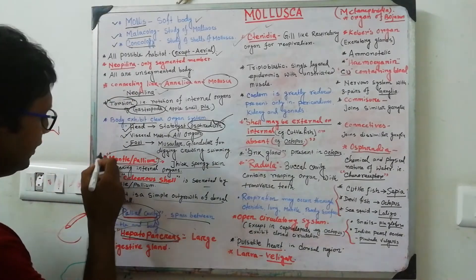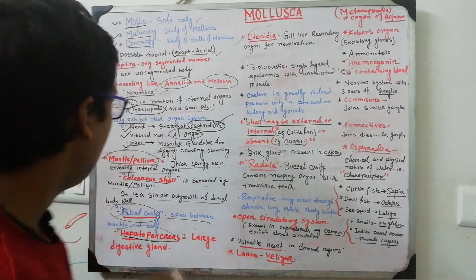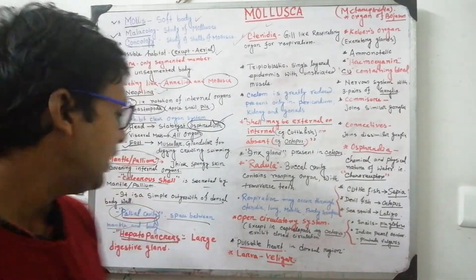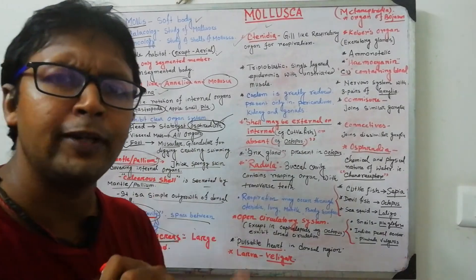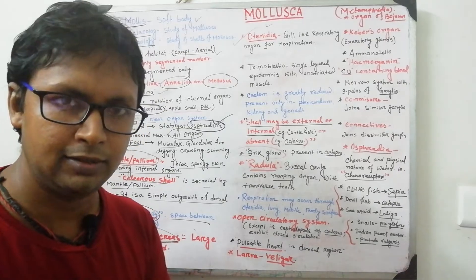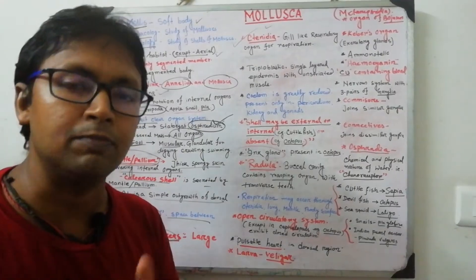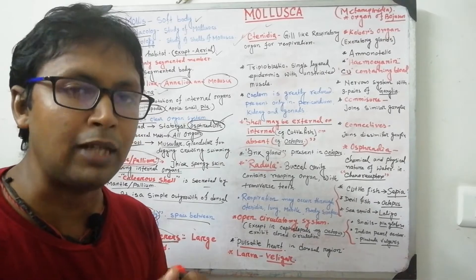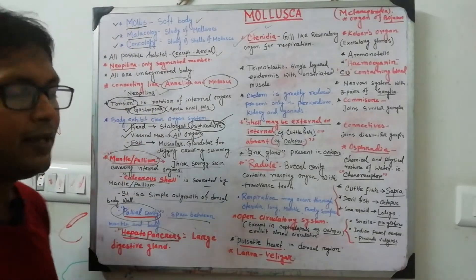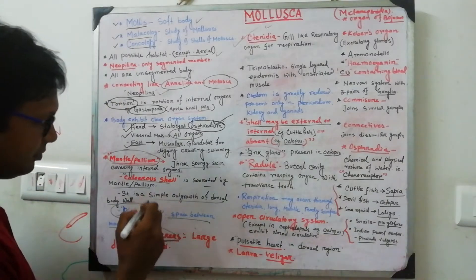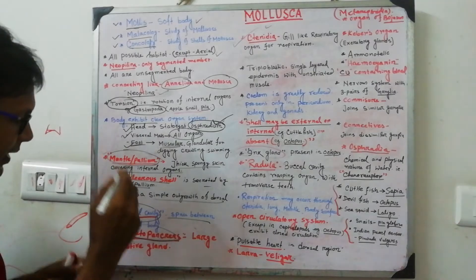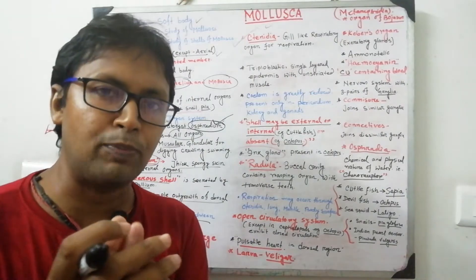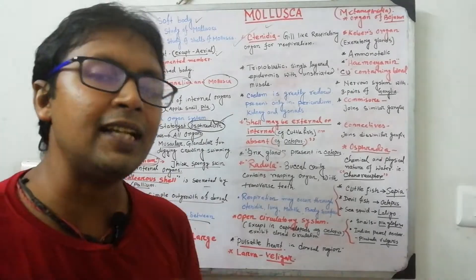Another hallmark trait is the mantle, also called the pallium. The mantle is a soft tissue covering that develops from the dorsal body wall as an outgrowth. It covers the internal organs and also releases calcium carbonate to form the outer shell. A pallial cavity — the space between the mantle and body — is also present.